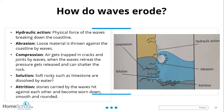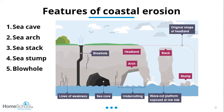Attrition is when stones carried by waves hit against each other and become worn down, smooth, and rounded. Think of 'a war of attrition' — two sides knock the stuffing out of each other. If you've ever been on Bray beach in County Wicklow, you'll notice lots of smooth pebbles that are great for skimming — those rocks were shaped and smoothed by attrition.